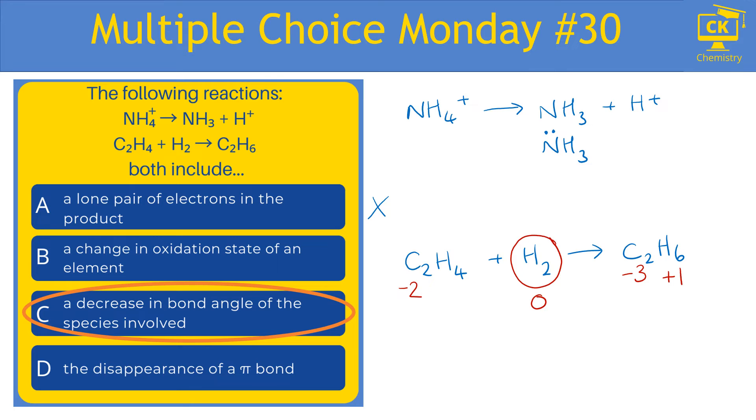However, in the top reaction, we're not doing anything with hydrogen, the element. What we're doing is losing or transferring H+. So what that means is that hydrogen is plus one in a compound, but it's still plus one over here and it's still plus one in ammonia.